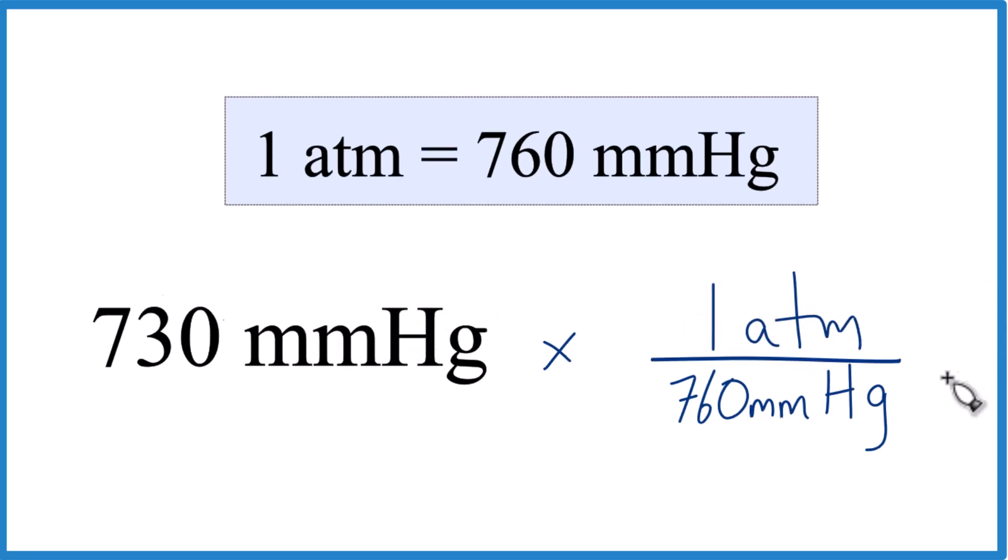So we multiply the top, divide by the bottom. Millimeters of mercury, it's on the top and the bottom. It cancels out. We're left with atmospheres. That's what we're looking for.